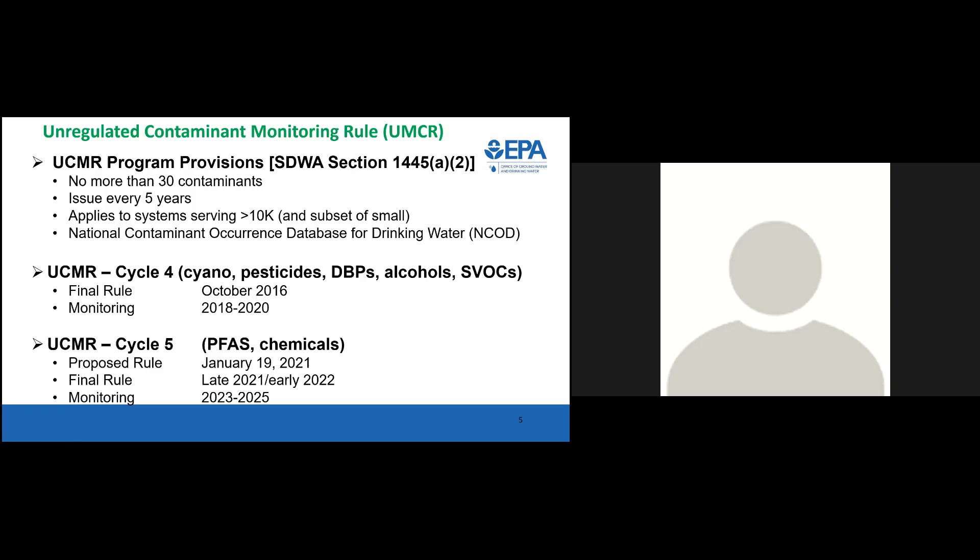This is kind of news-breaking: on January 19th, we announced our proposed UCMR 5. The UCMR 5 proposal includes monitoring for 29 perfluorinated compounds known as PFAS compounds. It also includes those six PFAS compounds that were part of UCMR 3 monitoring, and it includes the contaminant lithium. The proposal would require monitoring by water utilities between 2023 and 2025, with final results reported no later than 2026. Noteworthy is the lowering of the population threshold to include systems that serve greater than 3,300, which were not previously included in the universe of UCMR monitoring.